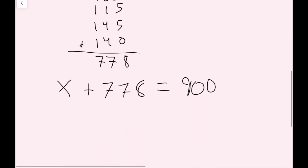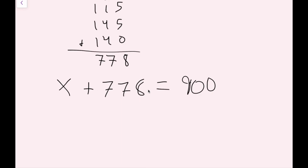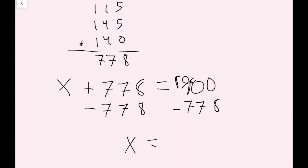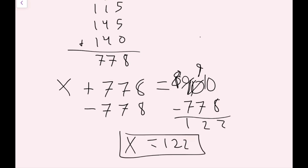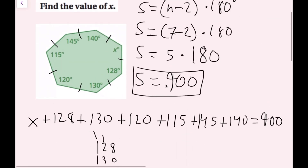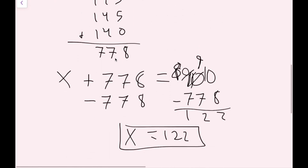To solve this equation, I subtract 778 from both sides. After borrowing and simplifying, I get x equals 122. So the angle is 122 degrees and our x value is 122. Now we are done.